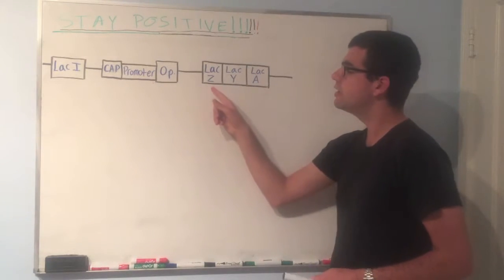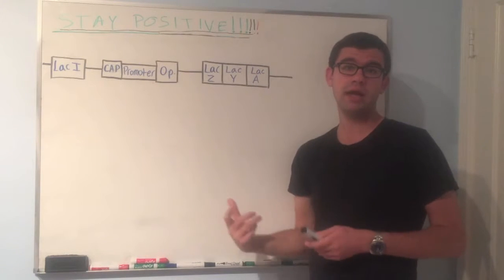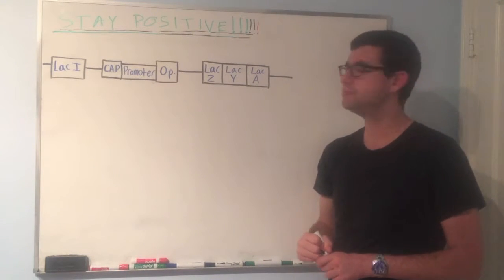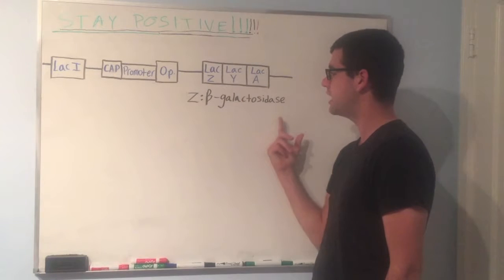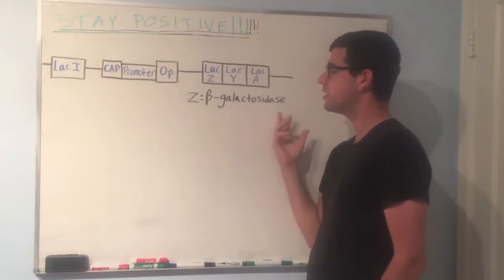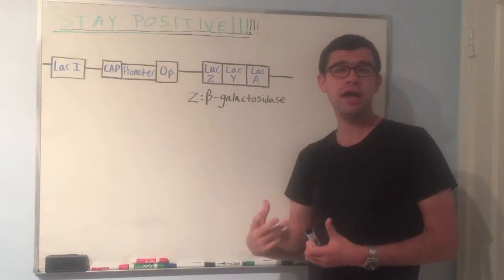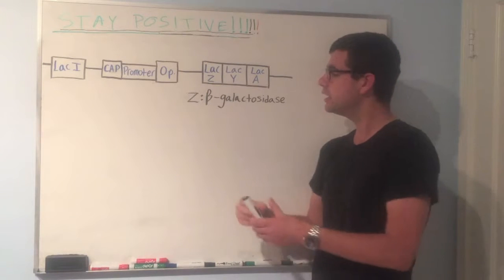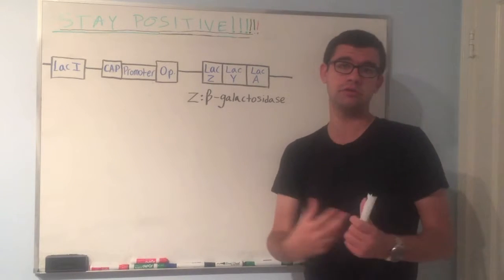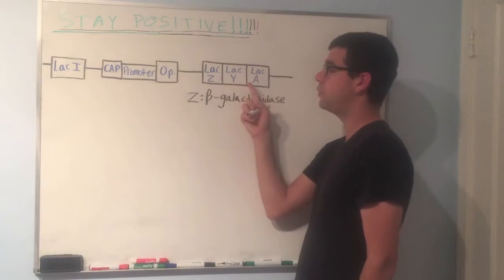LAC-Z is a gene that codes for an enzyme called beta-galactosidase. Let's write that out. Okay, so beta-galactosidase. Now beta-galactosidase is going to be the enzyme that actually hydrolyzes the lactose disaccharide into a glucose and a galactose monomer.